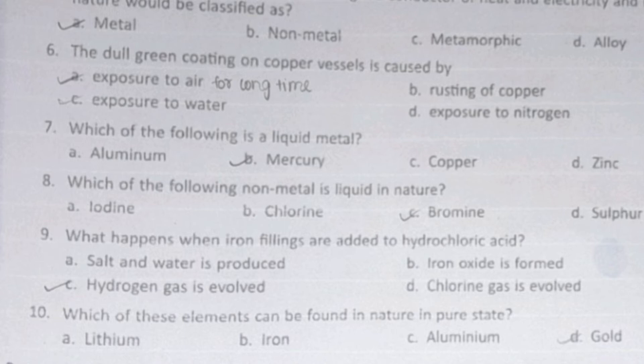What happens when iron filings are added to hydrochloric acid? The answer is hydrogen gas evolves. Which of these elements can be found in nature in pure state? The answer is gold. So now next: fill in the blanks.